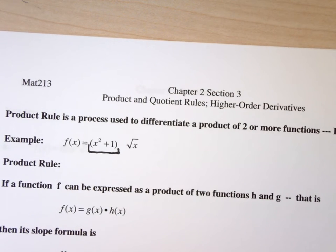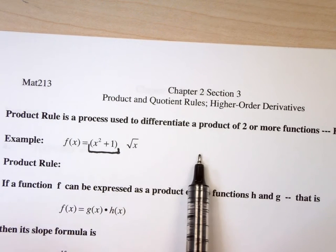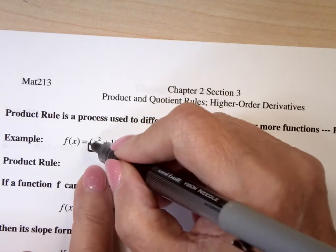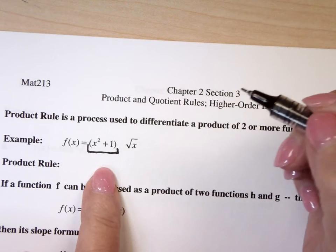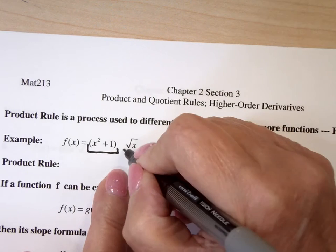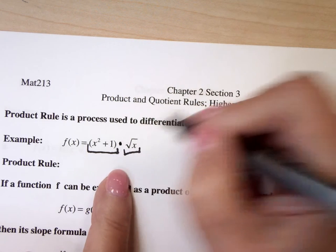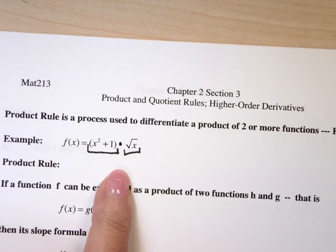Okay, so product and quotient rule. Suppose we have the quotient and the product rule of two functions. Here's your first function, which is x squared plus 1. Here's your second function, which is the square root of x. There's the times. That does not fall into our two rules.